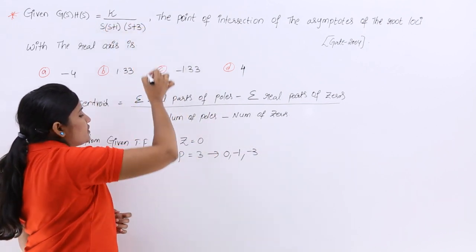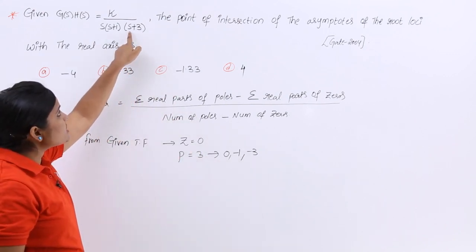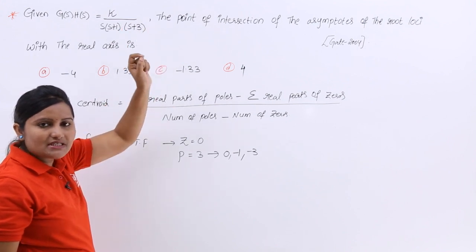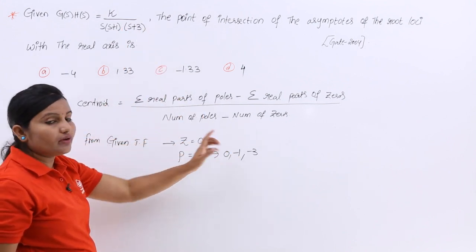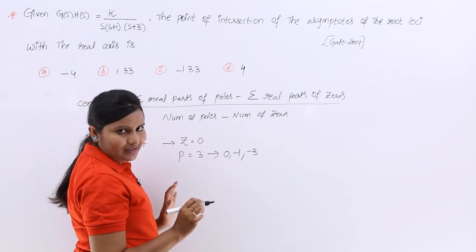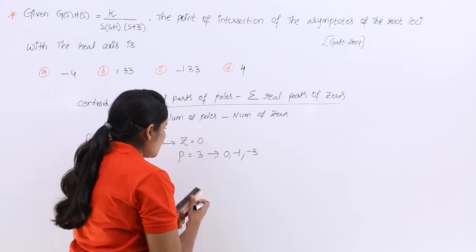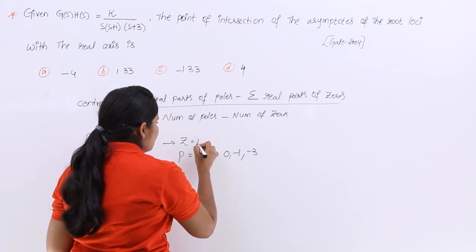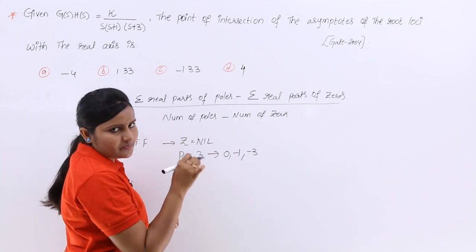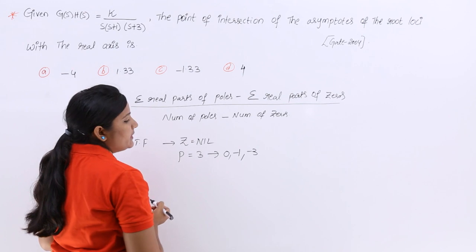Each pole is found by equating each denominator term to zero. For example, s+3=0 gives s=-3. So the number of zeros is nil (zero), and the number of poles is three, with pole values at 0, -1, and -3.